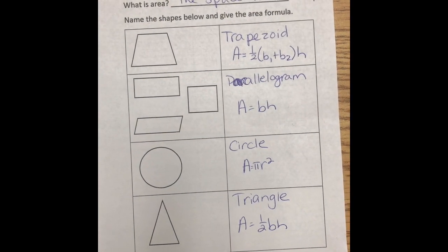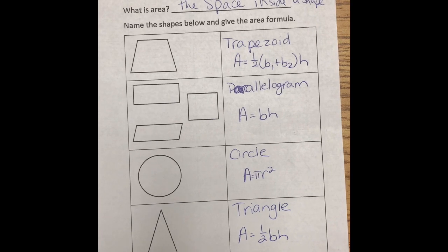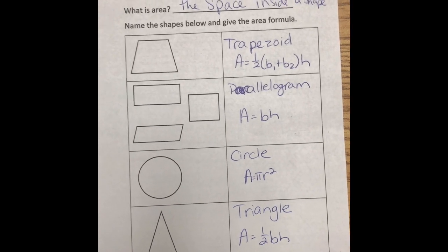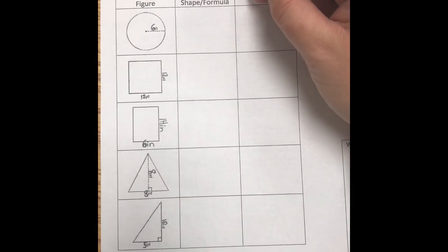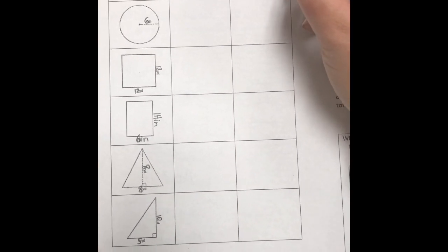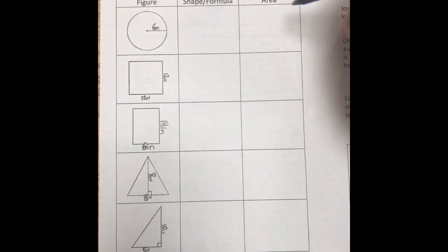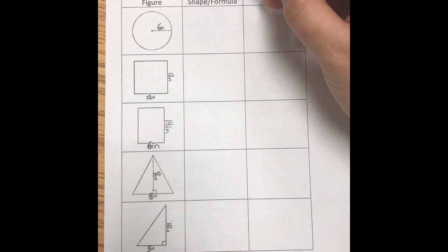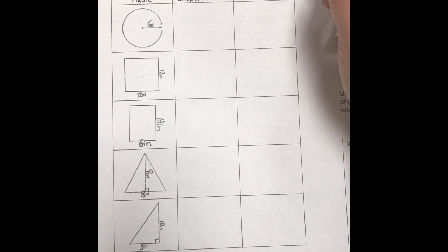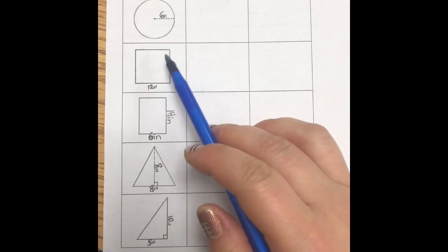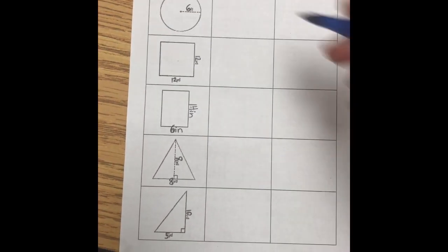All right, so this is what you should have on your paper. Trapezoid, parallelogram, circle, and triangle with their formulas. So check your work and then we'll move on. In the formulas, whenever you see a small b, that stands for the base length. The length of the base. And then h stands for the height length. So the length of the height. Obviously, a circle doesn't have a base or a height. That's why you need a radius.